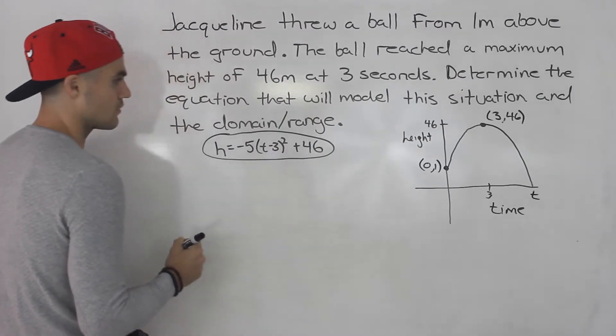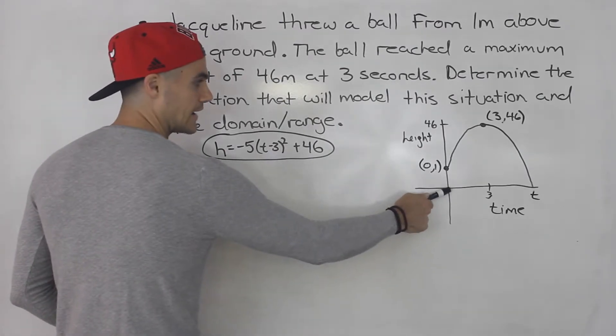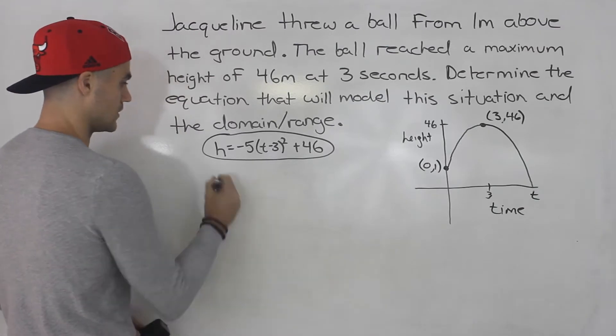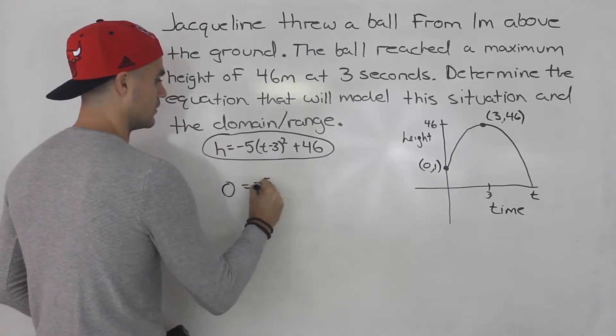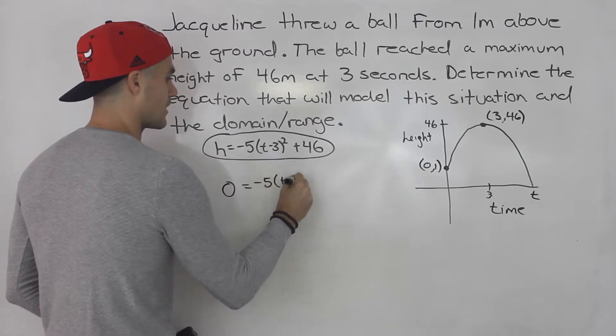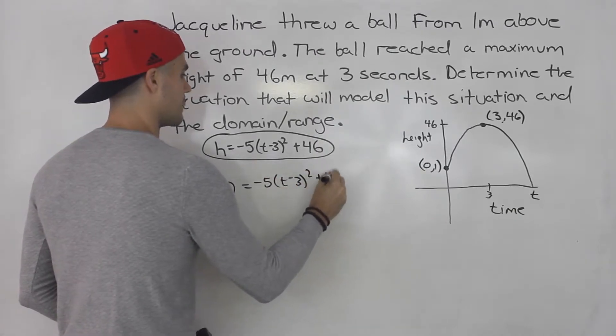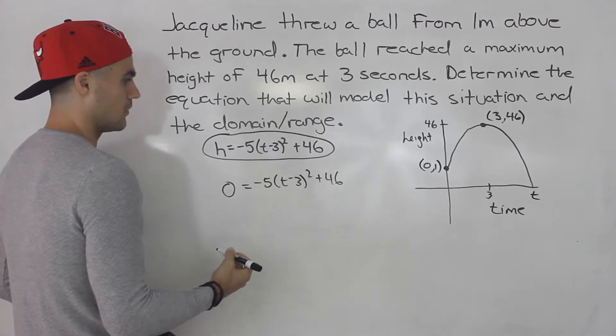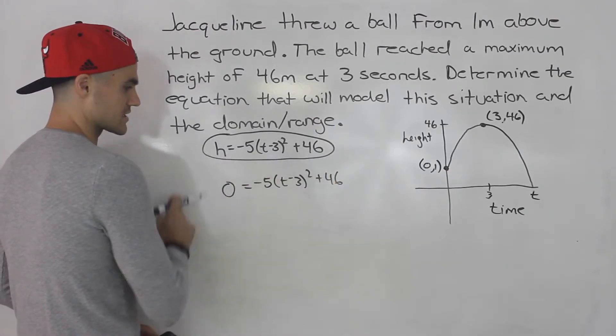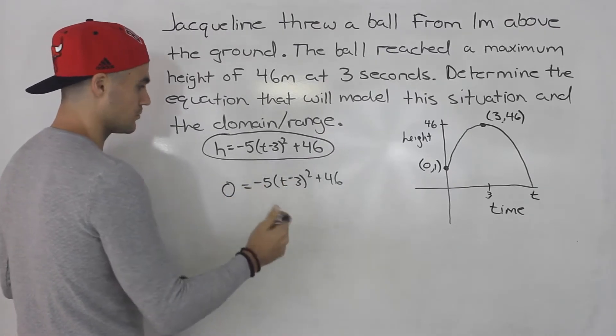So first thing we have to solve for is when the ball hits the ground. When the ball hits the ground the height is going to be 0. So we would plug in 0 for h here in our equation that we have. And then we would solve for this t value. Now multiple ways to solve for it. You could bring the 46 over, divide by negative 5, square root both sides.